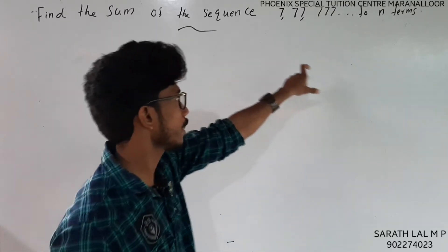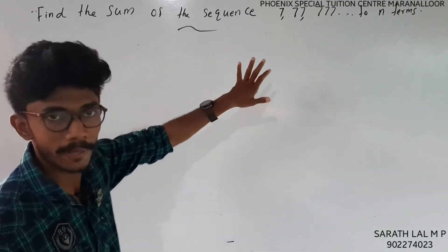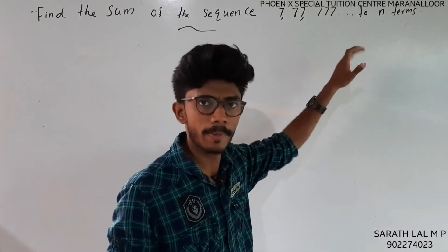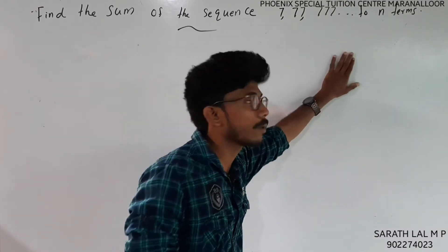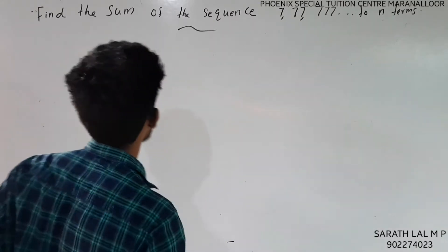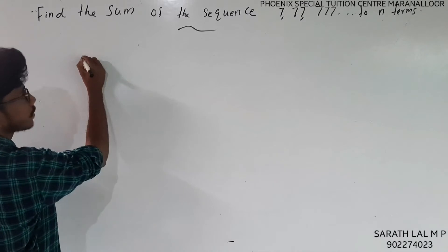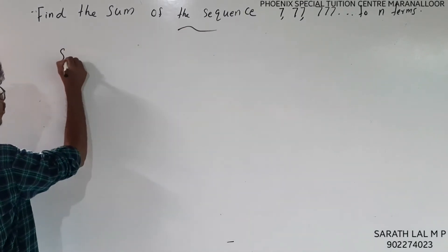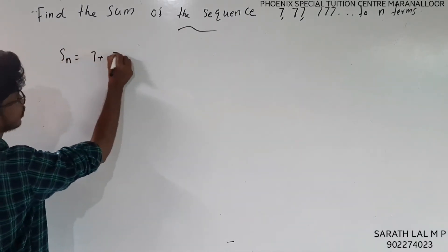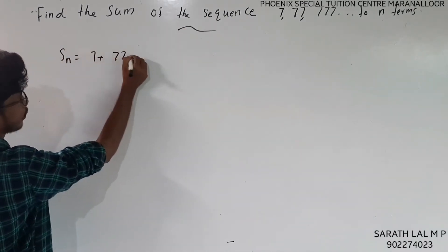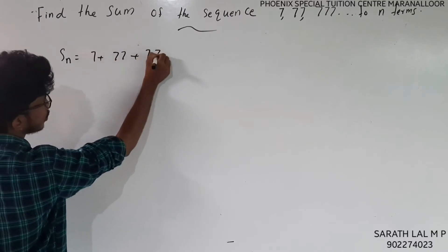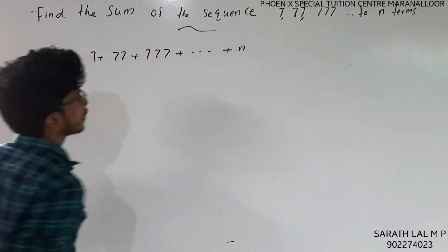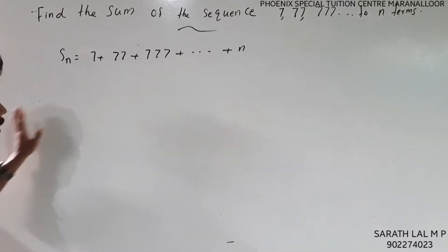This is a particular type of problem — it is not a straightforward GP or AP. We can see this type of problem. How do we handle it? If we put it as the sum, that is SM equals 7 plus 77 plus 777 plus 7777, and so on, up to n terms.